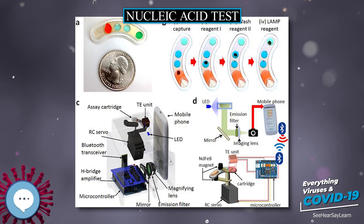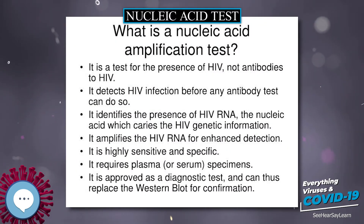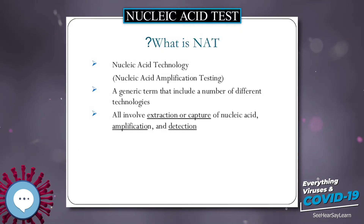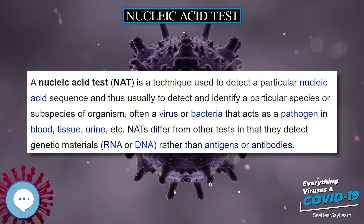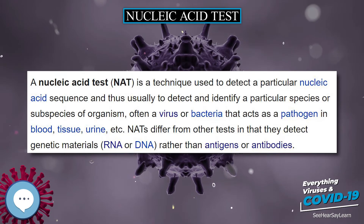A nucleic acid test (NAT) is a technique used to detect a particular nucleic acid sequence, and thus usually to detect and identify a particular species or subspecies of organism — often a virus or bacterium that acts as a pathogen in blood, tissue, urine, etc. NATs differ from other tests in that they detect genetic materials, RNA or DNA, rather than antigens or antibodies.